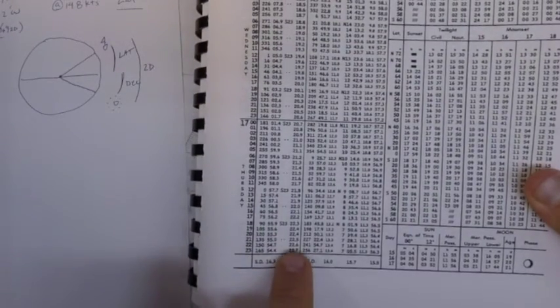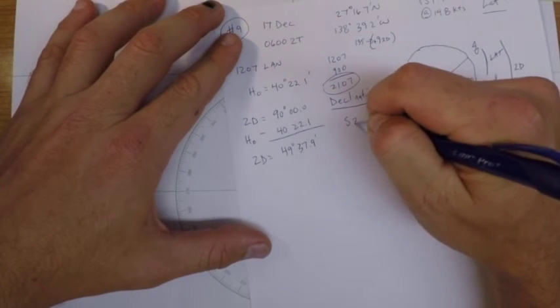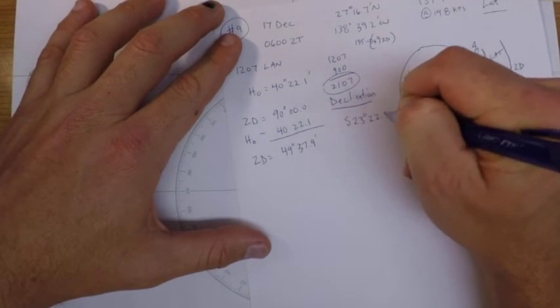So down here, the declination looks like it's not changing very much. So I'll pull out a declination value of south 23 degrees 22.5 minutes.